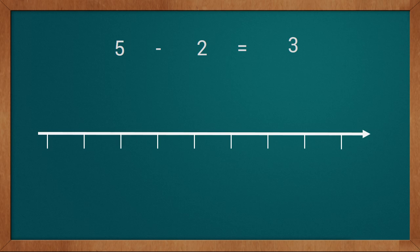We have a number line. Our first value is 5. So we will find 5 on the number line. We will start from 0 and count: 1, 2, 3, 4, 5. We reached 5 on the number line. Now our second value is 2.